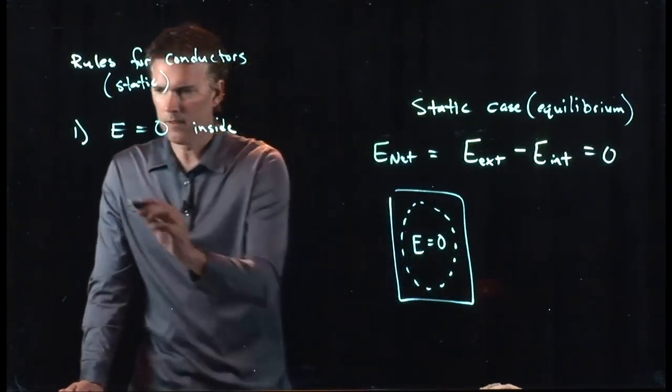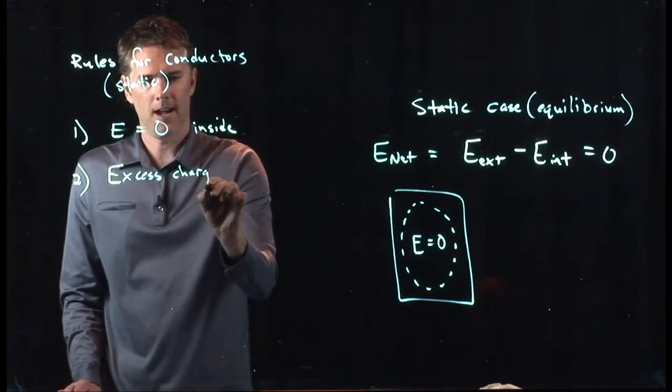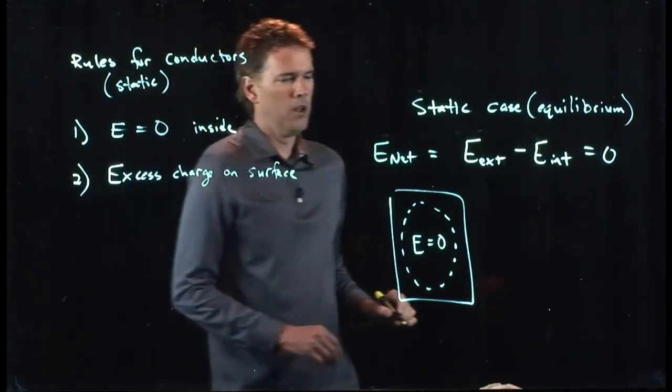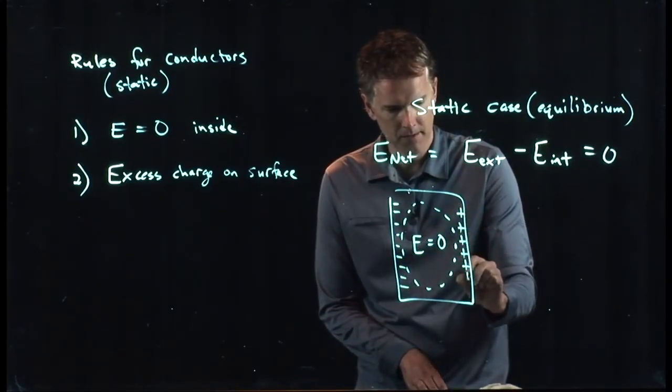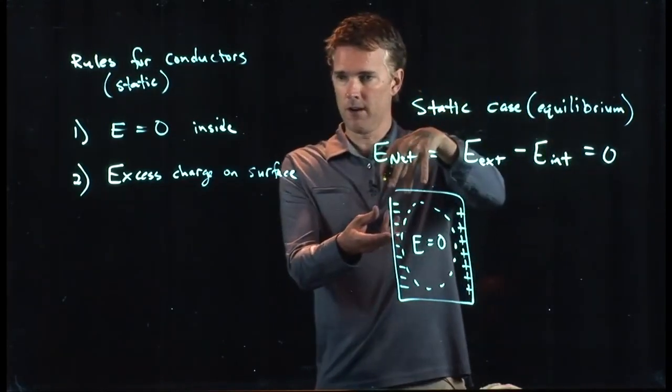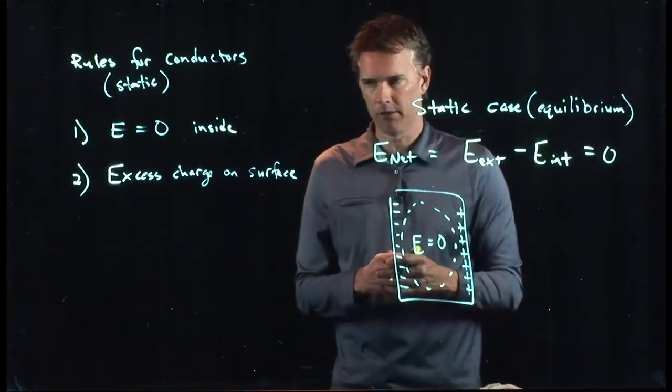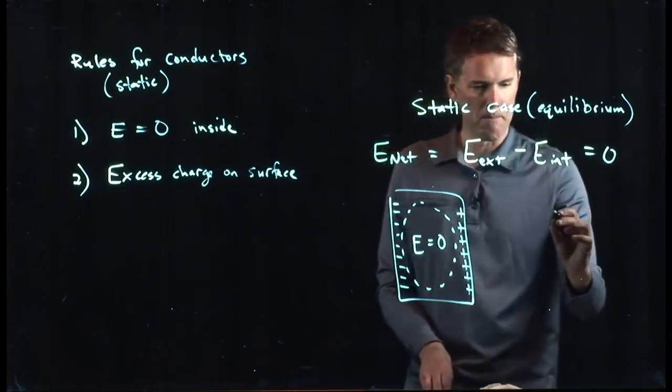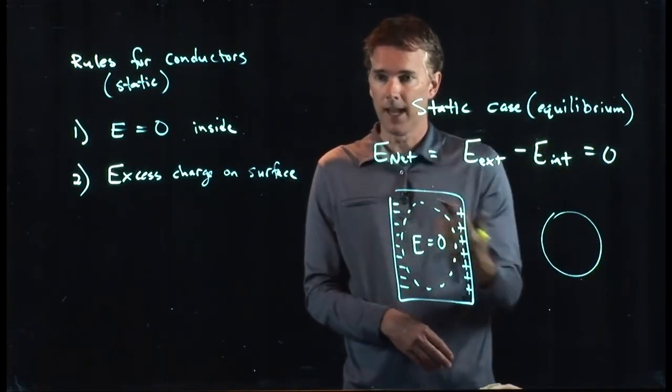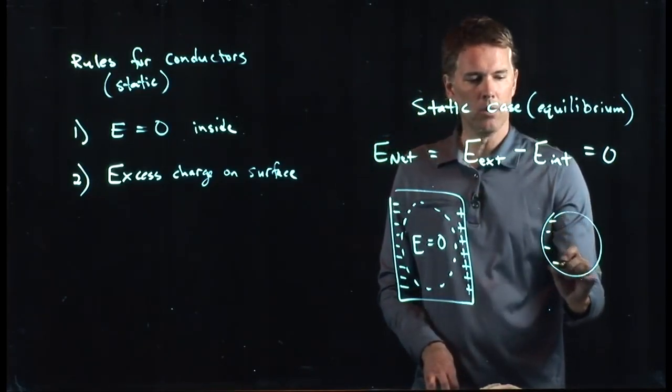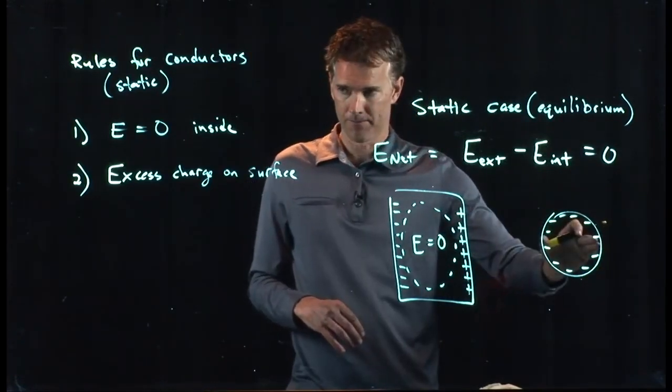But the second is any excess charge has to be on the surface. So we saw that all the negative charge went over to this side and all the positive charge stayed over on this side. If you sprinkled some more charge on there, it would all go to the surface. Any excess charge that you put on a conductor goes to the surface. It doesn't have to be in an external electric field or not. If you took a ball, a metal ball, and you just sprinkled some electrons on it, which we know how to do now—you take a metal ball and you drag it across the carpet, that's going to put electrons on it—they immediately go to the surface. And in fact, in the case of a sphere, all those electrons will distribute themselves uniformly.